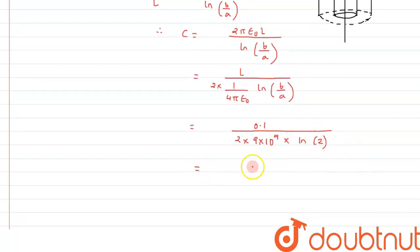On further simplification we can say this can be written as 10 raised to minus 1, 10 raised to minus 9, it will be 10 raised to minus 10, 1 upon 18 into the value of ln 2 which is 0.693.